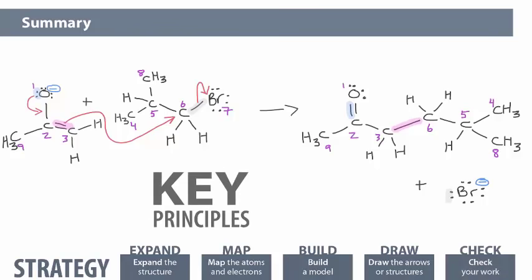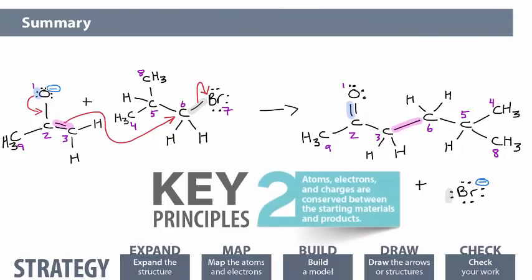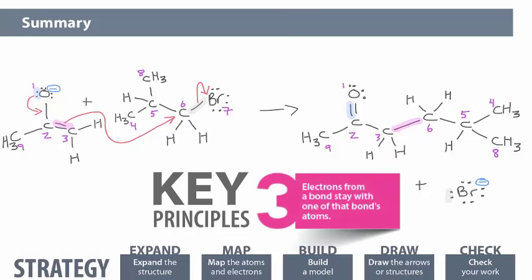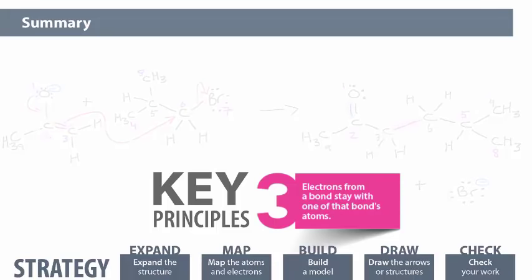We kept in mind some key principles as we did this, knowing that electron-pushing arrows always start at electrons and point to an atom or bond. Atoms, electrons, and charges are conserved between starting materials and products. There needs to be the same number on both sides. Because electrons stay with one of the originating atoms, we had to figure out which carbon the pi bond stayed with, either carbon-2 or carbon-3. We found that only one of those options made sense physically, the bond with carbon-3.